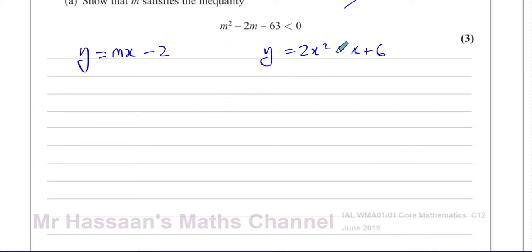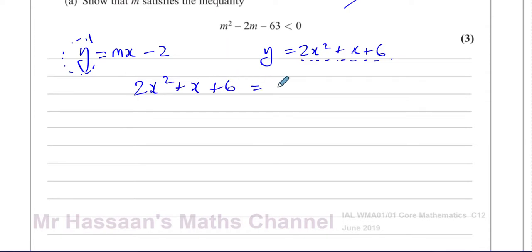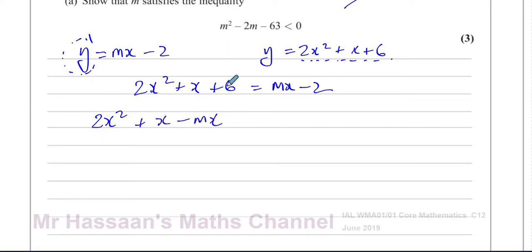We substitute — instead of Y, we use what Y equals in the other equation. If I replace Y with 2X squared plus X plus 6, I get 2X squared plus X plus 6 equals MX minus 2. Bringing everything to one side to form a quadratic equal to zero, the X terms give X minus MX, and the constants give plus 6 plus 2, which is 8. So we have 2X squared plus X minus MX plus 8 equals 0.